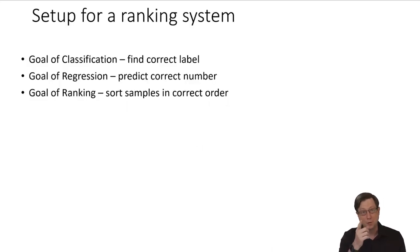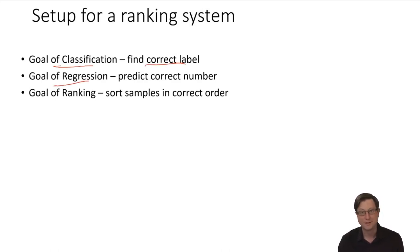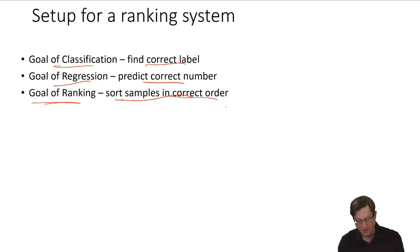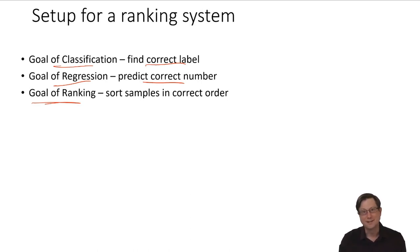As you know by now, the goal of classification is labels, the goal of regression is to predict a number. The goal of ranking is to sort samples, objects, entities, information into the correct order. It's not like the score is seven — it's that this sample should be above that sample. It's a little bit of a different way to look at a problem.